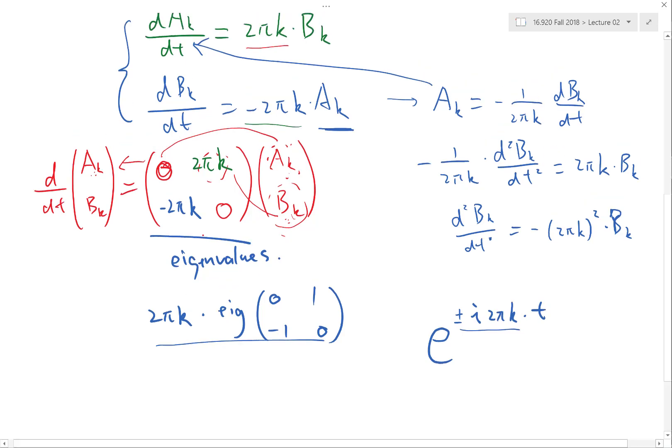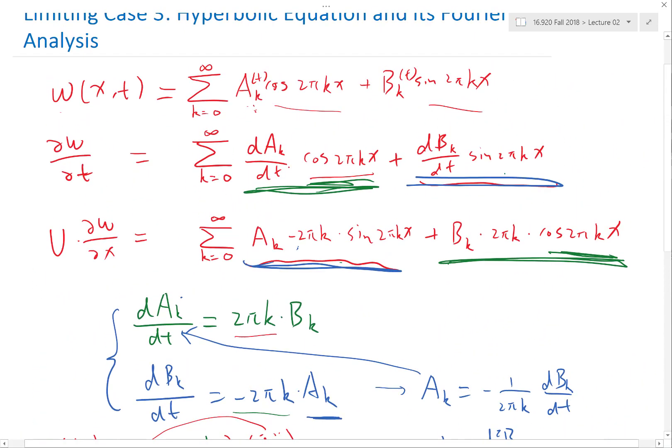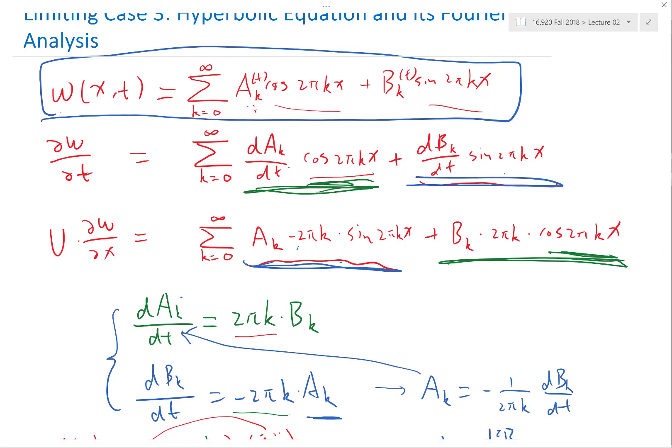So that means, let's go back and substitute our analysis into this equation. We know A and B, they both behave like harmonic oscillators, and the frequency at which they oscillate is proportional to K.